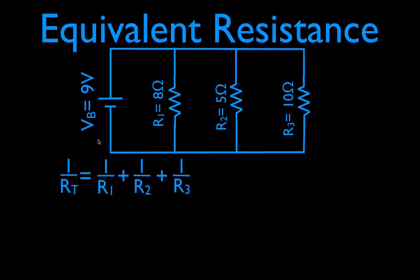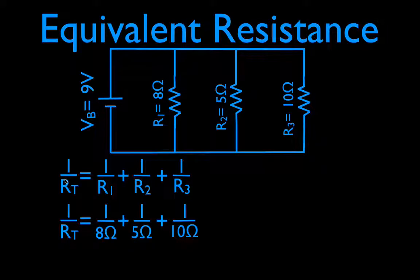That's the equation, and all we do, because we're solving for the total resistance, which is right here, we are going to plug our values in, which means 1 over RT equals 1 divided by 8 plus 1 divided by 5 plus 1 divided by 10. Now I'm just going to do that on my calculator. 1 divided by 8 plus 1 divided by 5 plus 1 divided by 10.